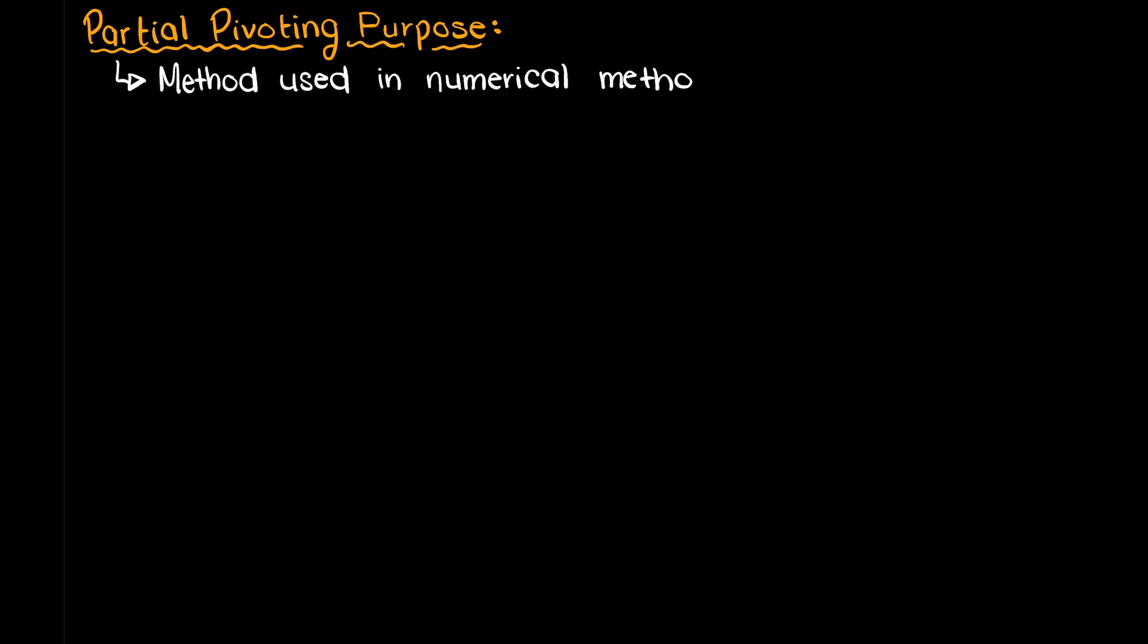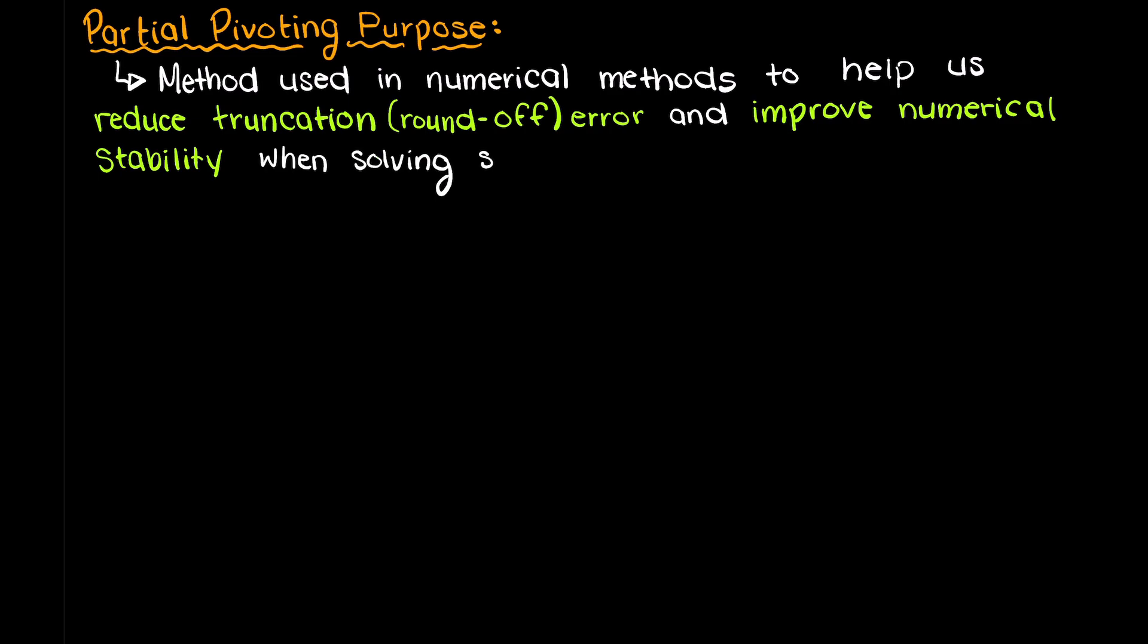Partial pivoting is the method used in numerical methods to help us reduce truncation or round-off error when solving our system of equations, and it increases our numerical stability.